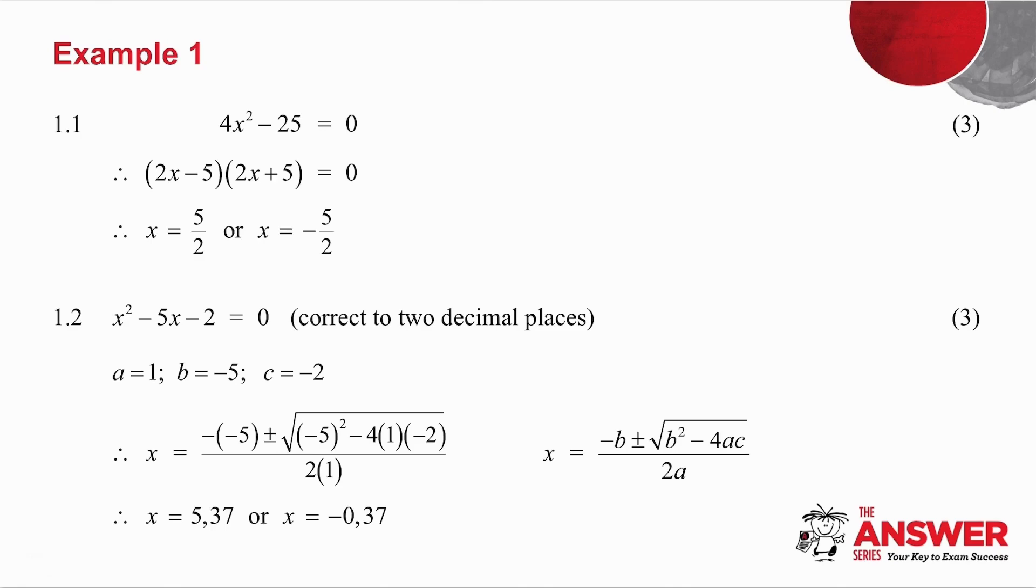Question 1.1 is difference of 2 squares, so I factorize it and I get my 2 answers. Question number 1.2 again says to us solve for x, correct to 2 decimal places, so that gives you the hint that you need to use the quadratic formula. My a is 1, b is minus 5 and c is minus 2. So substitute into the quadratic formula and then use your calculator to get the 2 answers.